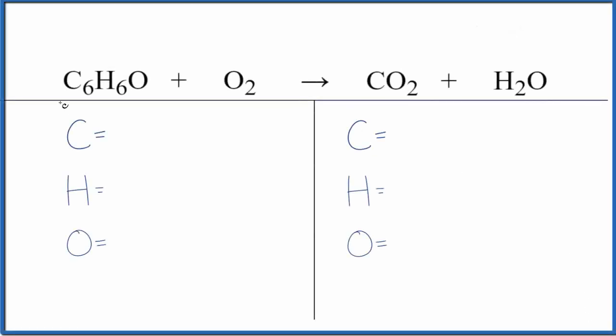Let's write the balanced equation for C6H6O plus O2. We'll also write the states and look at the type of reaction. Why don't we start out with the type of reaction?